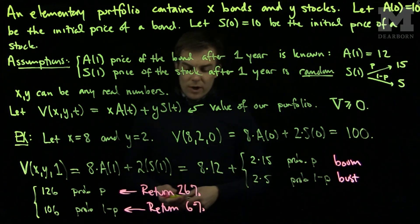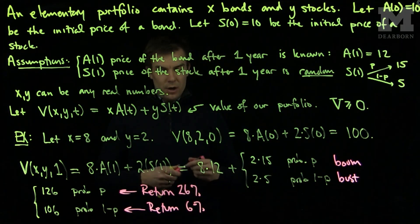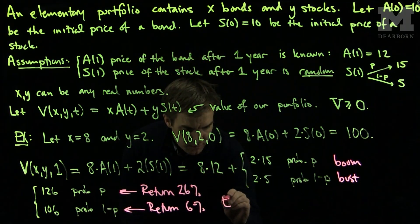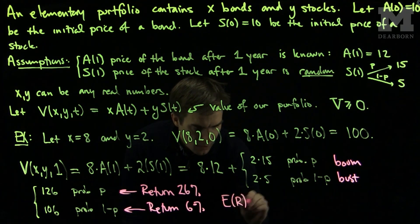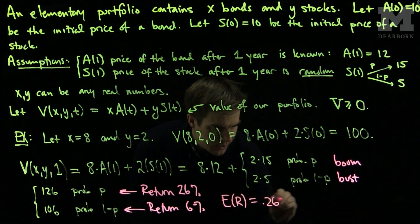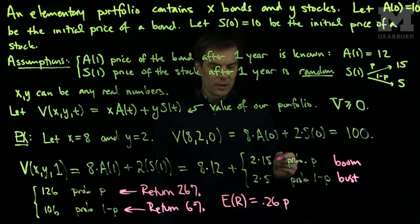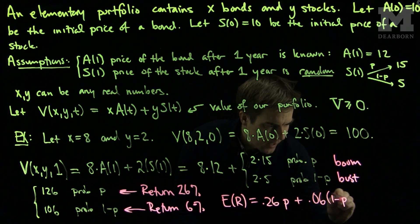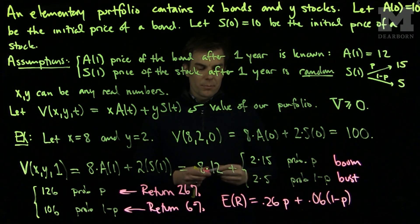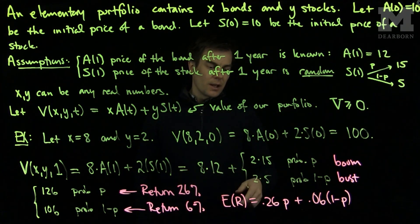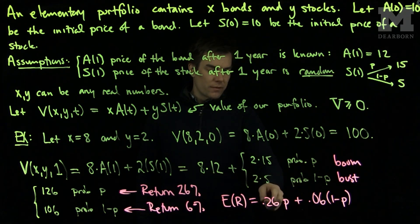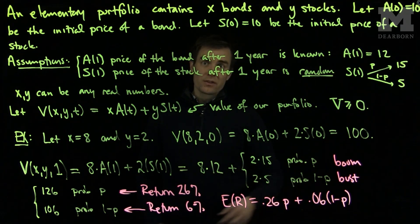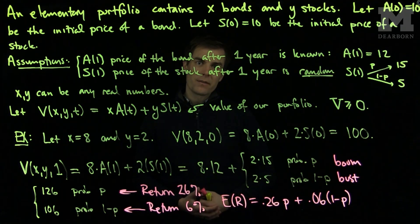Now, we can ask the question: what is the expected return? The expected return will be 0.26 times P, that's the probability that that will occur, plus 0.06 times 1 minus P. So for different values of P, we'll get different expected returns. In particular, we can figure out which values of P will give me the highest, and which values of P will give me the lowest. Thank you very much.